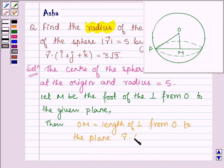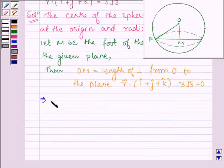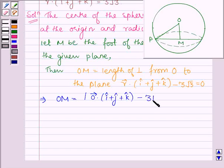Vector r dot (i cap plus j cap plus k cap) minus 3 root 3 equals 0. This implies that OM equals the magnitude of dot product of 0 vector with (i cap plus j cap plus k cap) minus 3 root 3, divided by the magnitude of vector (i cap plus j cap plus k cap).